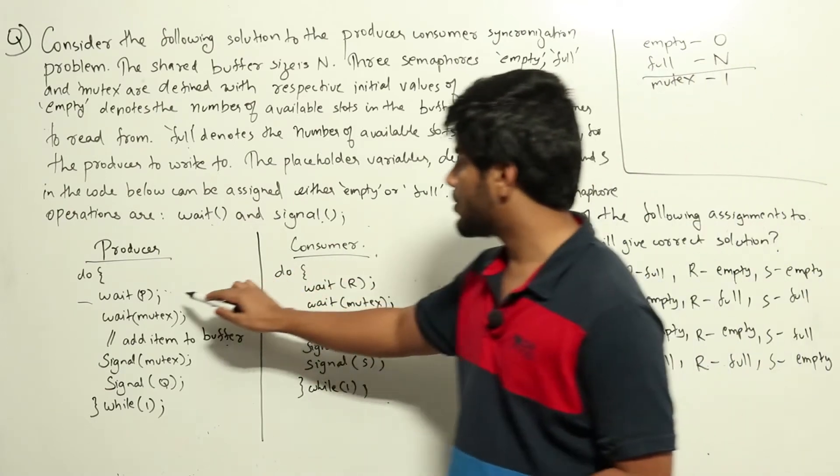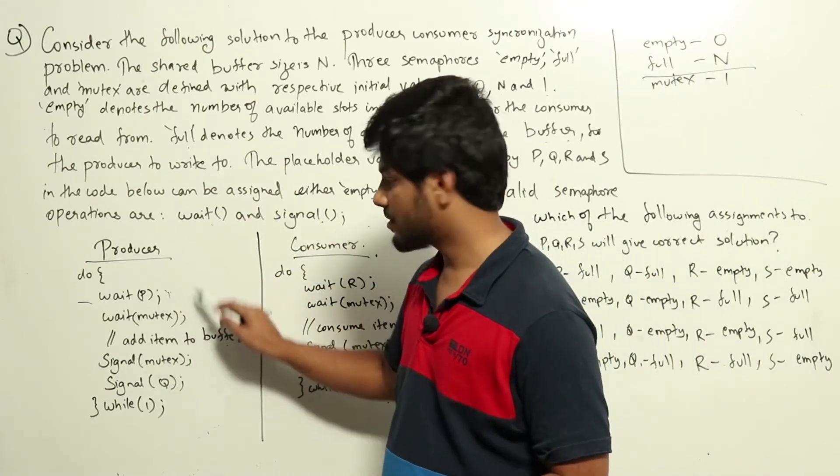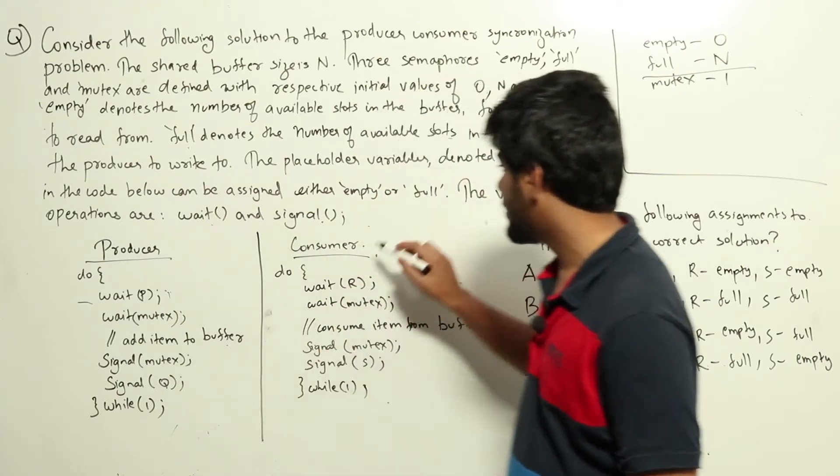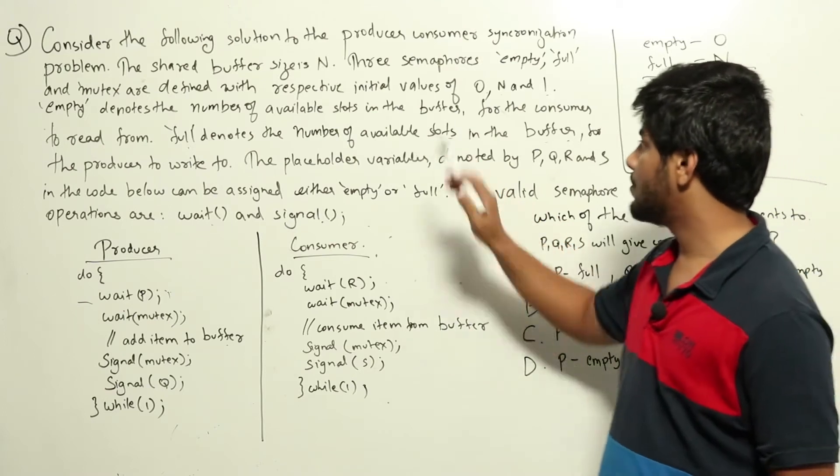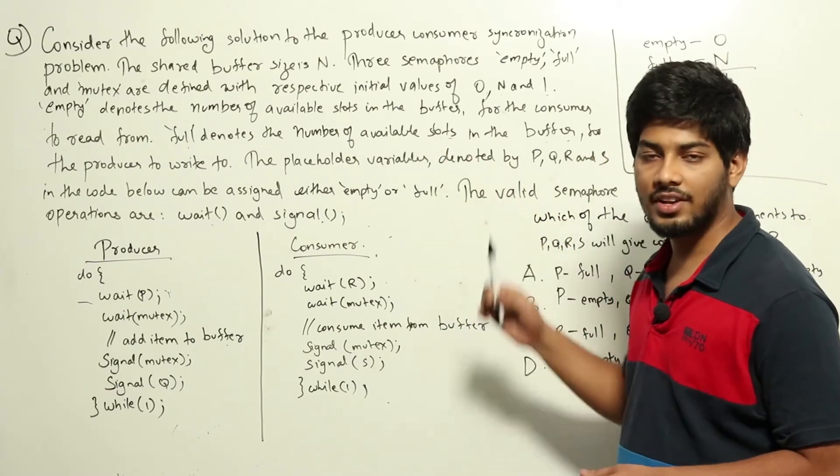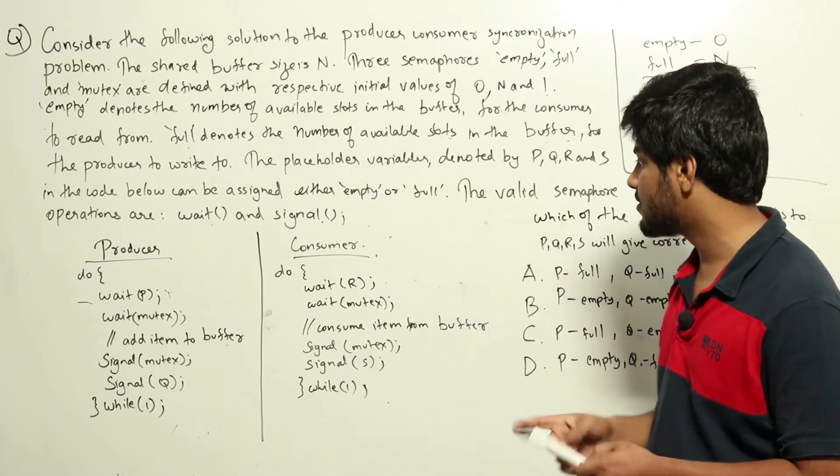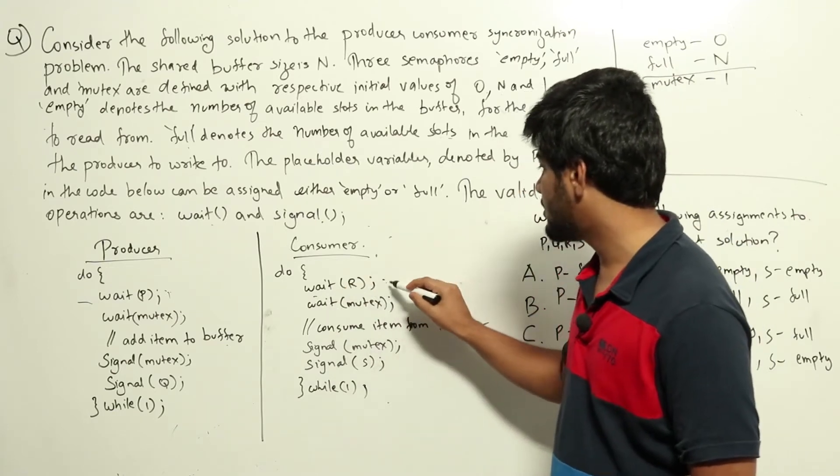Initially producer should be able to proceed without any issues. But consumer should be blocked before full is assigned to n, meaning that there are n slots available in the buffer, so there is nothing currently. This wait of R should be blocked.